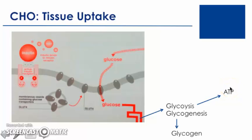However, in more of an energy surplus state — a tissue storage metabolic environment — the glucose can actually be used to form glycogen. This process is called glycogenesis. Glucose can also be converted to acetyl-CoA and converted to fat via fatty acid synthesis.